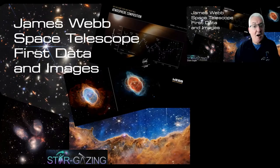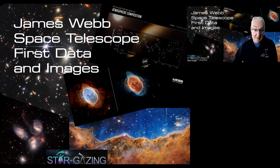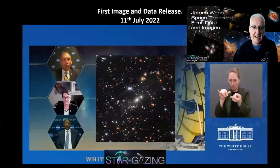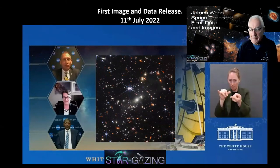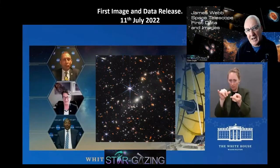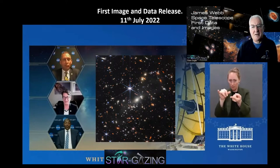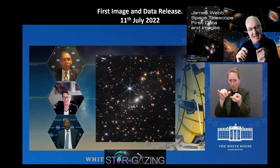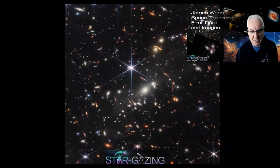Here's my take on the images and data that have now been released from the James Webb Space Telescope. It all started a couple of Mondays ago with an absolutely disastrous webcast from NASA from the White House. Joe Biden released this image - I'm not sure what those three people on the left-hand side are doing in these Webb Space Telescope hexagon frames, but they never actually spoke or did anything, which was really strange.